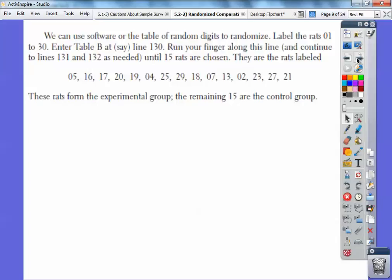And as you can see when you look at that table, line 130, these are the first 15, 05, 16, 17, 20, 19, 04, and so on and so on. So these rats form the experimental group and so the remaining 15 would be your control group. So there's a couple of ways to do that.